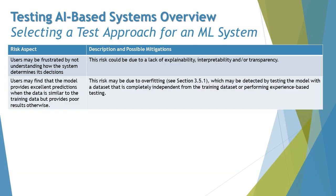Moving on, users may be frustrated by not understanding how the system determines its decisions — meaning there is no clarity about how exactly the system works. This risk could be due to a lack of explainability, interpretability, and transparency, and the mitigation is to perform the required level of testing to measure these characteristics.